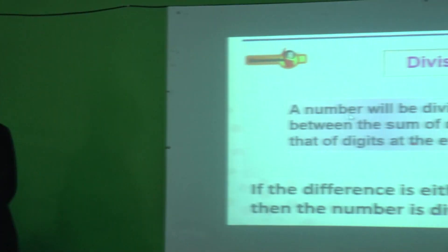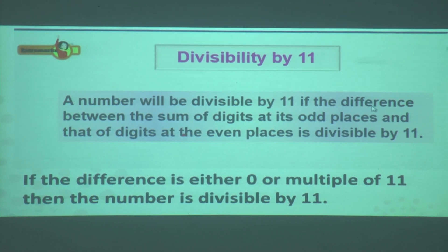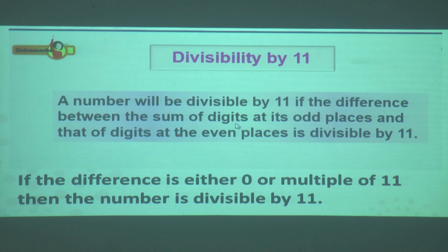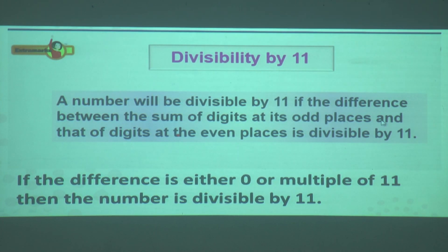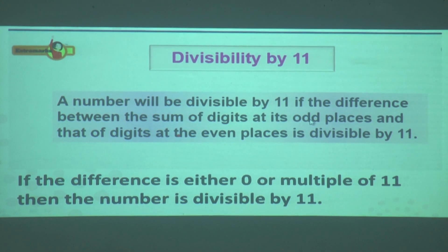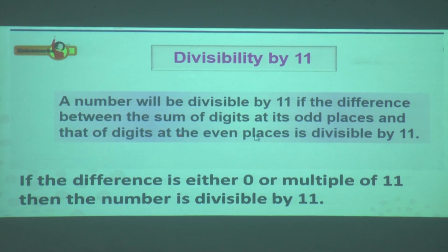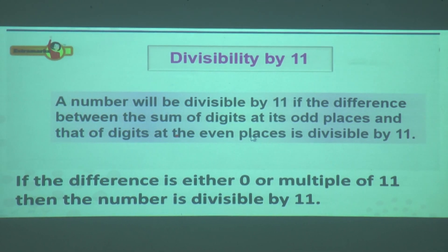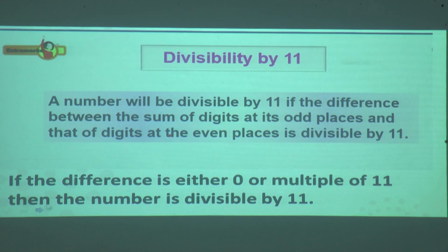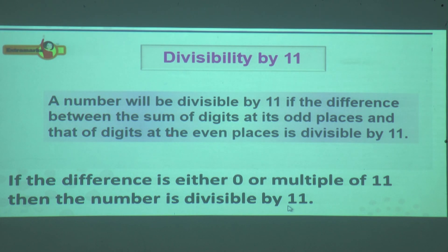Divisibility by 11: A number will be divisible by 11 if the difference between the sum of the digits at its odd places and the sum of the digits at the even places is divisible by 11. If the difference is either 0 or a multiple of 11, then the number is said to be divisible by 11.